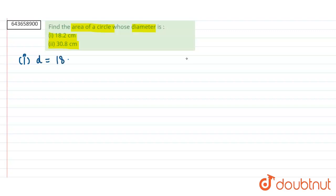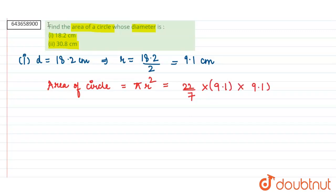For first part, diameter is equal to 18.2 cm. This implies that radius is equal to 18.2 divided by 2, that is 9.1 cm. Area of a circle is equal to π r² which is equal to 22 by 7 into 9.1 into 9.1. 9.1 divided by 7 becomes 1.3, and multiplying all these three terms we get 260.26 cm².